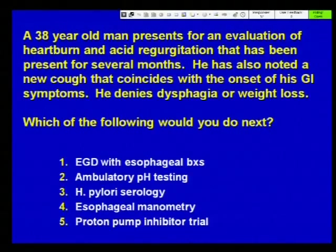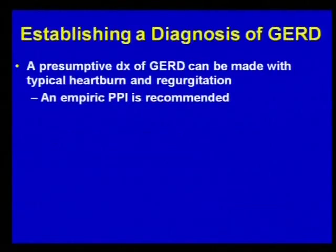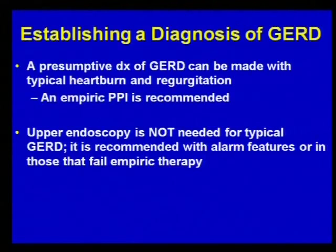53% chose option five, a proton pump inhibitor trial, which is the best answer in this case. To establish a diagnosis of reflux disease, you can do so based on typical heartburn symptoms and regurgitation. This patient had that in the absence of any alarm symptoms such as dysphagia, odynophagia, or weight loss. The guidelines suggest that when you have typical features, an empiric PPI trial is recommended. You certainly don't need to do an upper endoscopy for typical reflux symptoms as long as there are no alarm features.